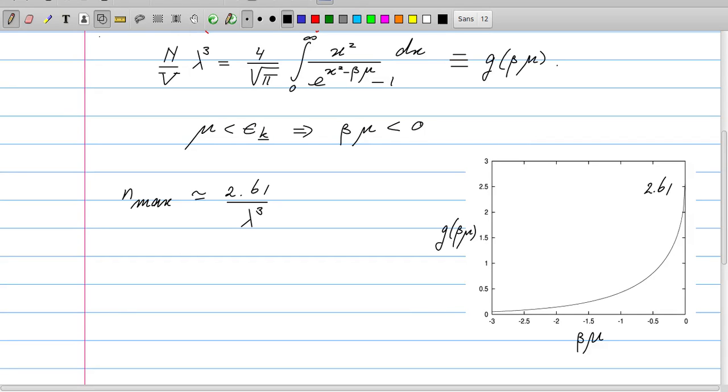Now this is strange because the particles do not interact, so what would prevent me from putting more than 2.61 particles per λ³ into the system? I can keep on adding particles to the system, and because they do not interact, the system should just accept them. So have we done something wrong in our analysis?